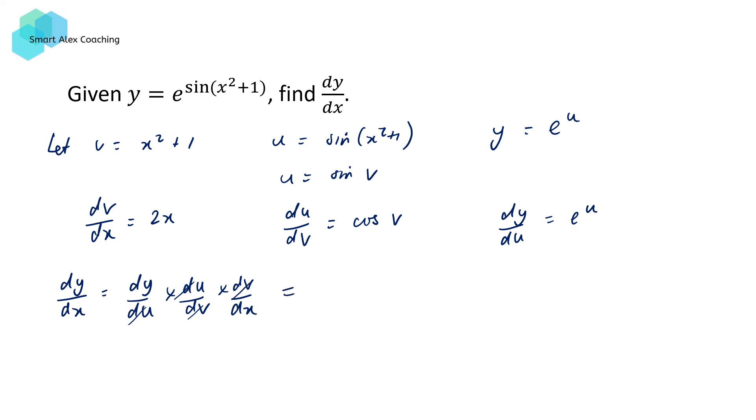Putting this together, we're going to have that being equal to e^u times cos v times 2x. We're now going to replace the variables u and v and write it in terms of x. And this is going to give us e^(sin(x² + 1)) times cos(x² + 1) times 2x. So tidying everything up, we have dy/dx equals 2x times cos(x² + 1) times e^(sin(x² + 1)). Complicated expression, but that's the correct answer.